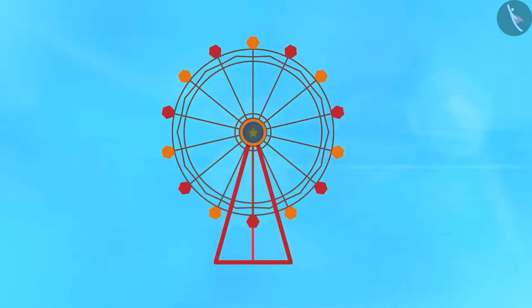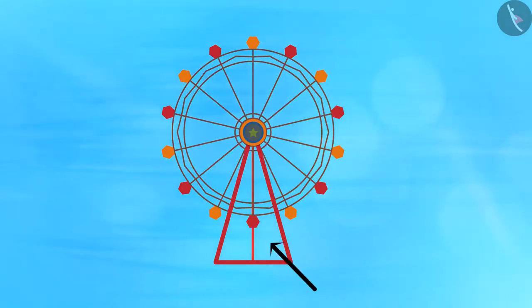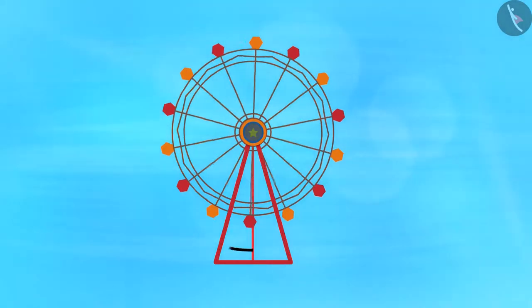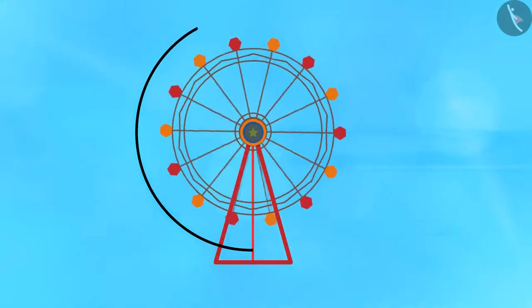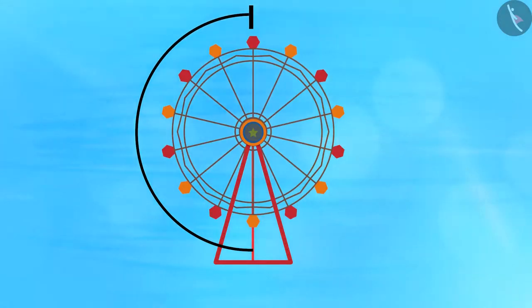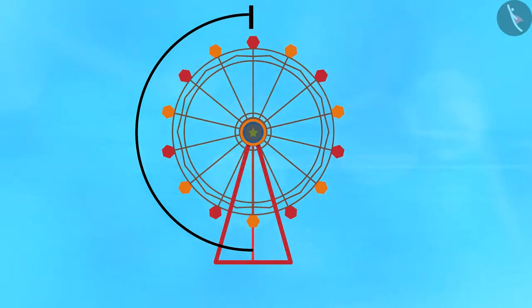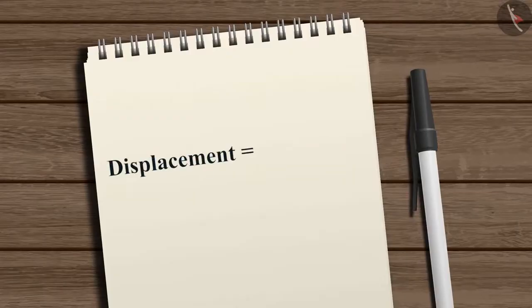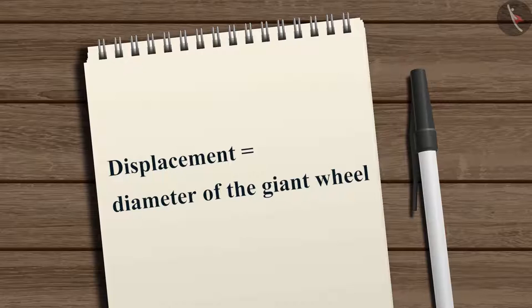Consider another example: imagine you are sitting on a seat in a giant wheel, starting at the bottom. After half a rotation, you reach the top. The displacement from the initial position equals the diameter of the giant wheel.